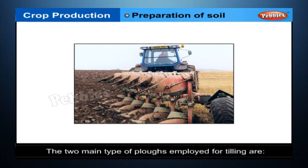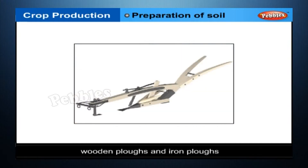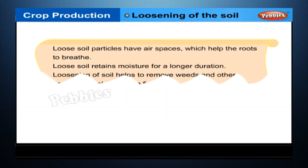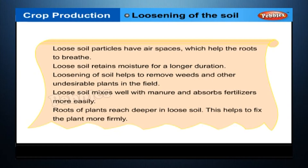The two main types of plows employed for tilling are wooden plows and iron plows. Loosening of the soil is important because loose soil particles have air spaces which help the roots to breathe. Loose soil retains moisture for a longer duration. Loosening of soil helps to remove weeds and other undesirable plants in the field. Loose soil mixes well with manure and absorbs fertilizers more easily. Roots of plants reach deeper in loose soil, helping to fix the plant more firmly.